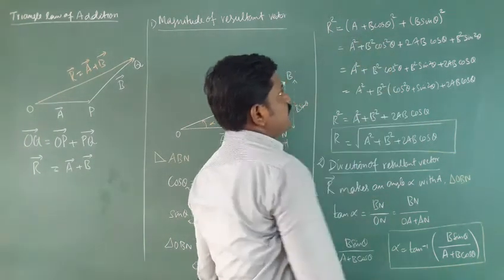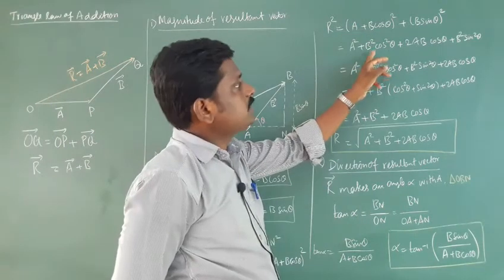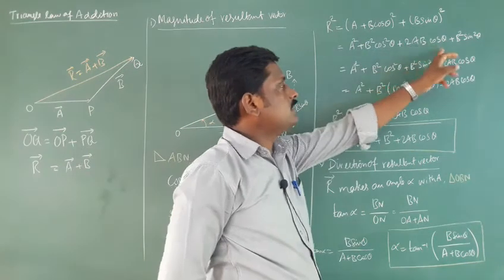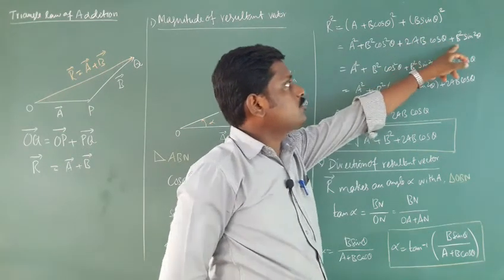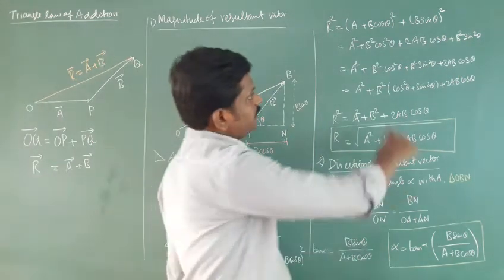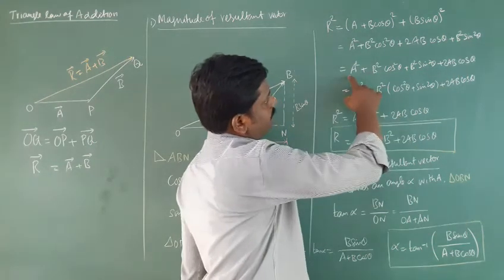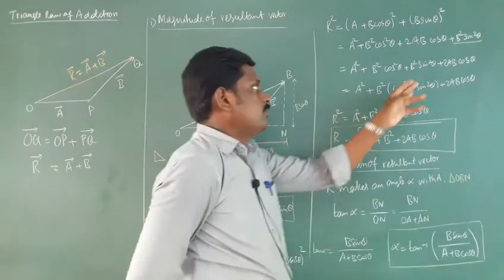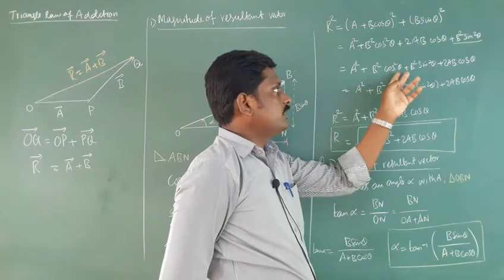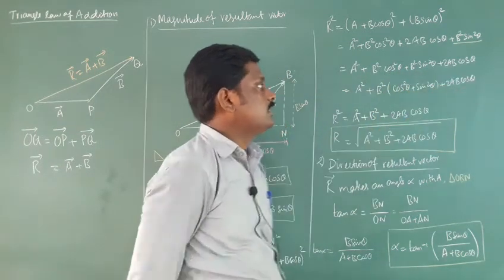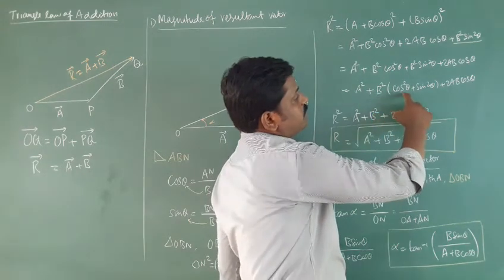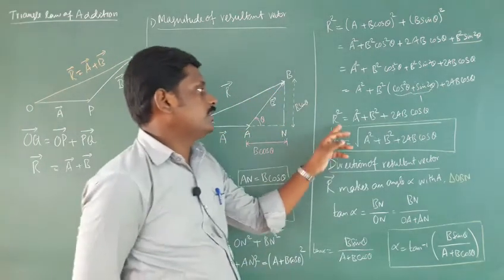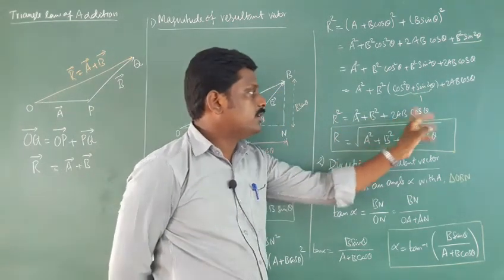Expanding A plus B cos theta whole squared gives A squared plus B squared cos squared theta plus 2AB cos theta, and B sin theta whole squared gives B squared sin squared theta. Rearranging, we get A squared plus B squared cos squared theta plus B squared sin squared theta plus 2AB cos theta. Taking B squared common gives B squared times cos squared theta plus sin squared theta, which equals 1. So finally R squared equals A squared plus B squared plus 2AB cos theta.